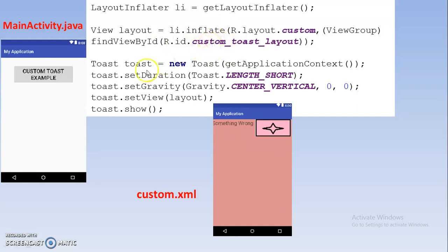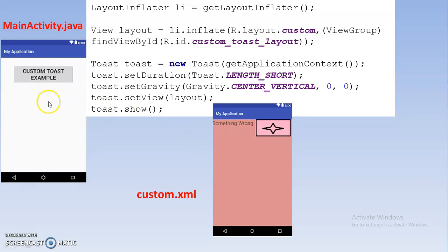After doing all this, you create the usual Toast object, and here you can write the activity class name, 'this', or getApplicationContext() — it will return the activity class name. Then set the duration, which means the toast will be shown for a long or short duration. Set the position — here center_vertical means you specify the position as center vertical; you can also specify x and y axis offsets if needed. Finally, toast.setView(layout) — we are setting that layout in the activity and accessing the XML file to display the output.